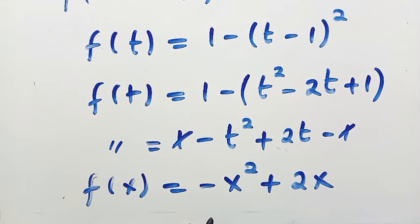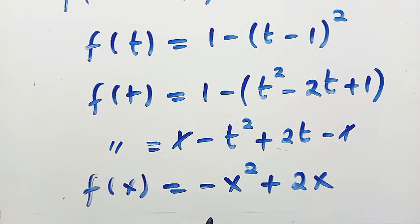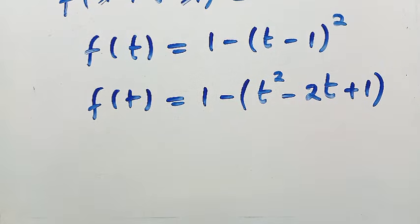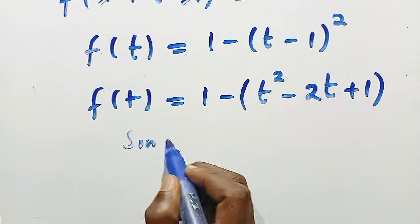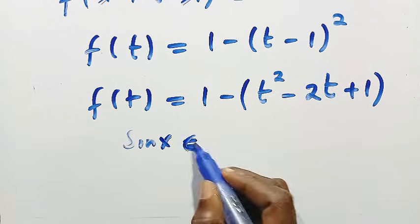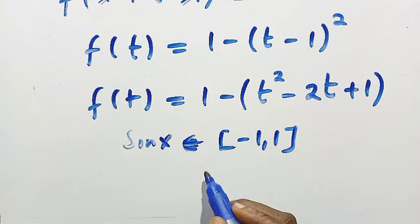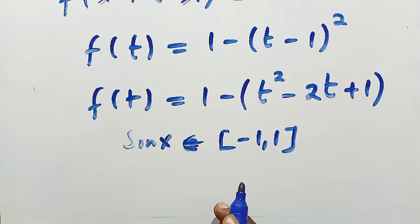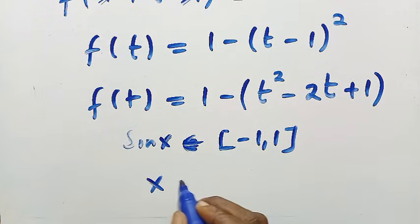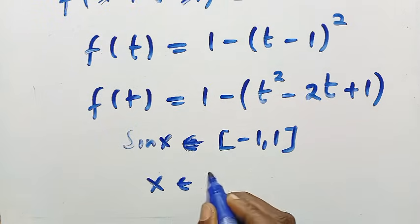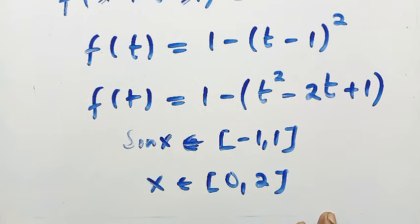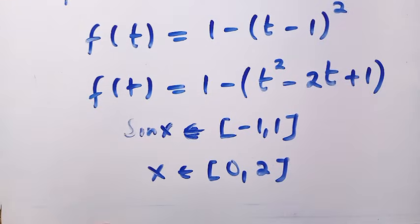By replacing t with x, we have f(x) equals minus x² plus 2x. This is the solution to this function as f(x). But how can we define the domain? It's very simple because we are given sin x, which is a trigonometric function. We know that sin x has a range that is a member of [-1, 1]. That is the value between minus 1 and 1.